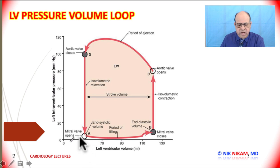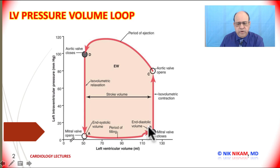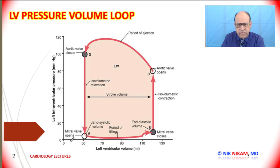This continues until the ventricular pressure drops below that of the left atrium, at which point the mitral valve opens and the next cardiac cycle begins. This pressure and volume loop can tell us a lot about the size of the heart, the function of the heart, and how the heart behaves in heart failure and in valvular heart diseases.